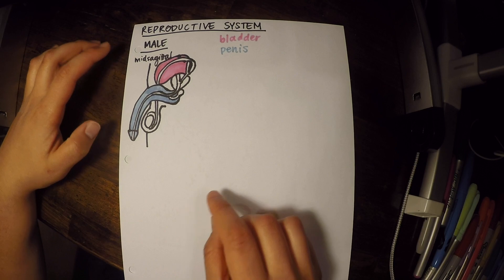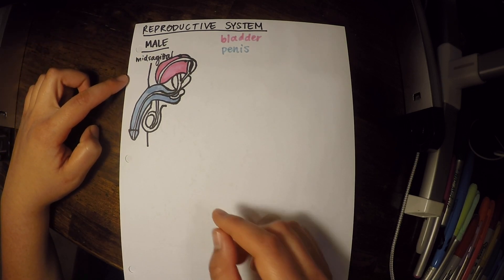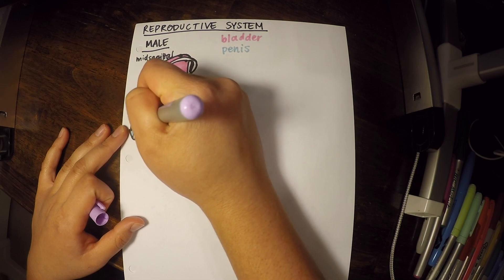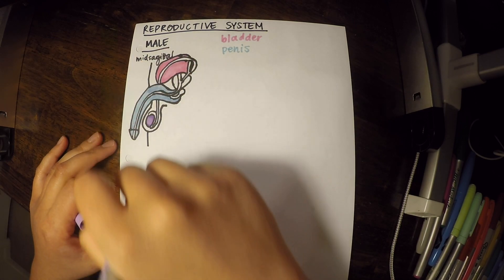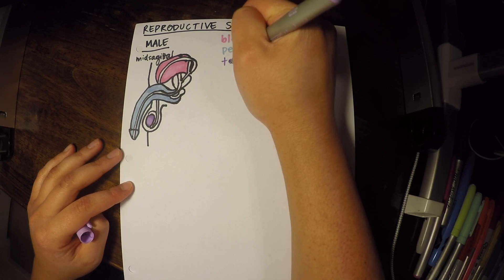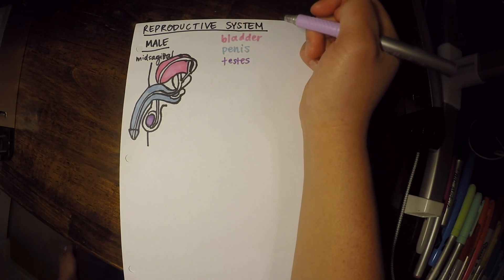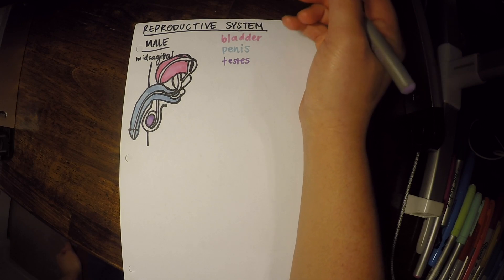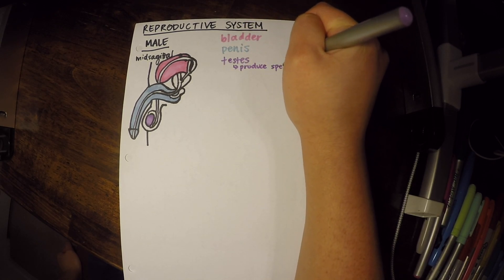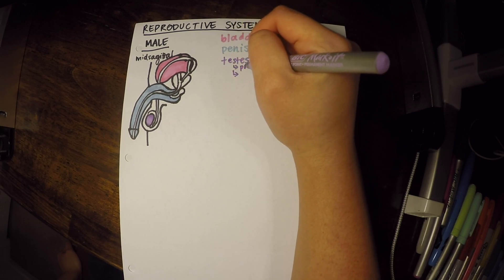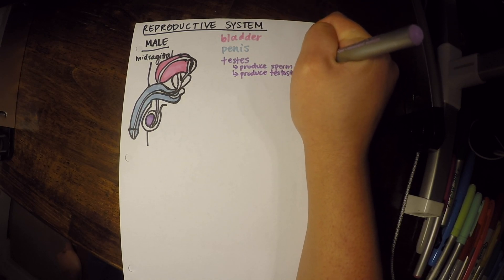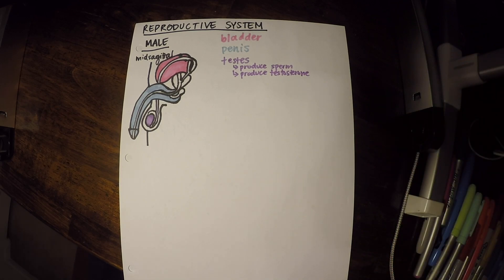Now that we have those major organs — the bladder and the penis — I'm going to label the testes. We've talked about those before, I believe during the endocrine system, and now we're going to go into a little bit more detail. The testes have two different functions: they produce sperm, and they produce testosterone, which is probably the most important male hormone.